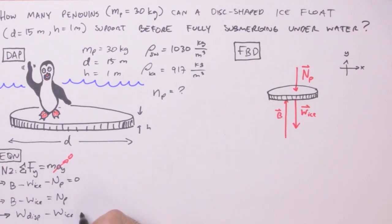Minus the weight of the ice is equal to, and instead of the normal force to the penguins, I'm actually going to write the weight of the penguins. Because that ice float's not accelerating, we can assume that that normal force is equal to the weight of those penguins.